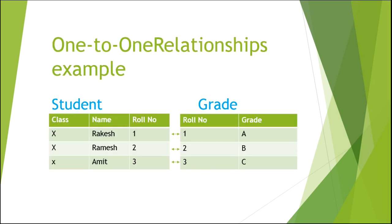Let me explain with a simple example. We have two tables: student and grade. The student table has three records — rule number one: Rakesh, class 10th; rule number two: Ramesh, class 10th; rule number three: Ramesh, class 10th. The grade table has rule number one: A grade, rule number two: B grade, rule number three: C grade. Rule number one has one matching record in the grade table, and the grade table has one matching record with the student table. So we can say the student table and grade table are in a one to one relationship.